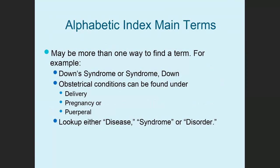There are different ways to look up the same code. For example, you can look up Down syndrome under D, or look up 'syndrome, comma, Down' under S. Obstetrical conditions are in delivery, pregnancy, and puerperium. The index tries to predict how you will think to look something up. I always say look up the most obvious term first — you might get lucky. If not, try something else.